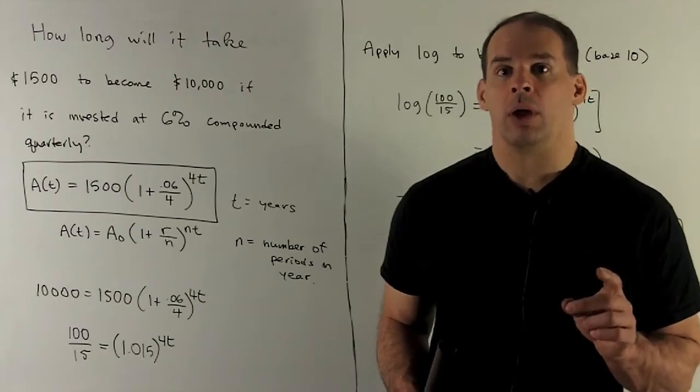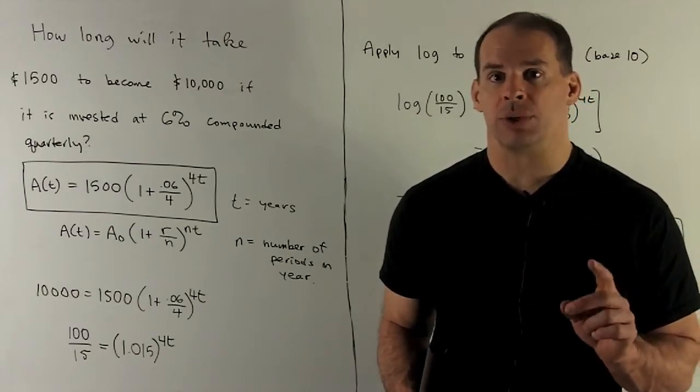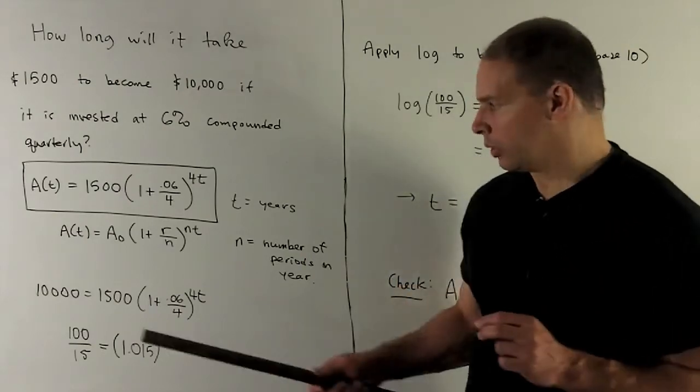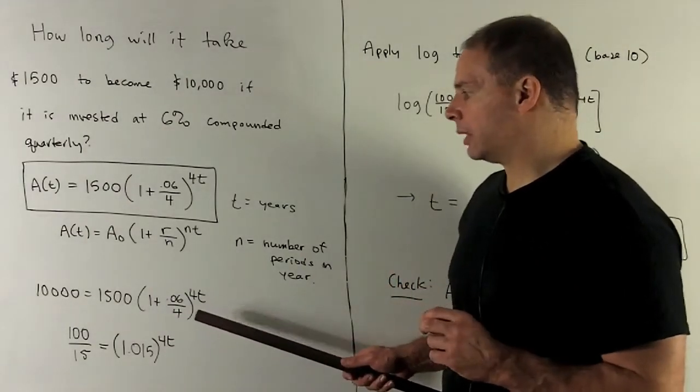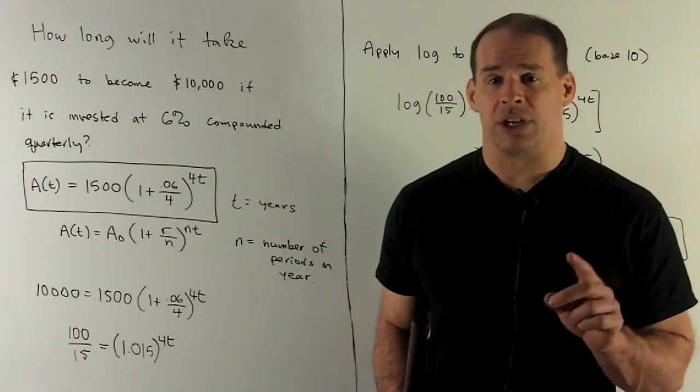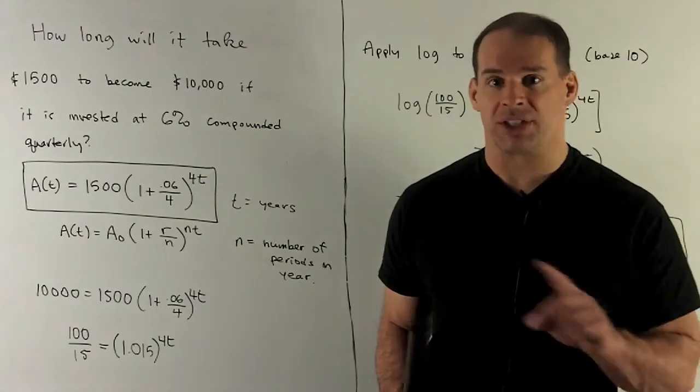So we want to know when is our equation equal to $10,000, and then we'll solve for t. So we're looking at this equation here. I move the $1,500 to the other side, and now I have an equation where the exponent is isolated.